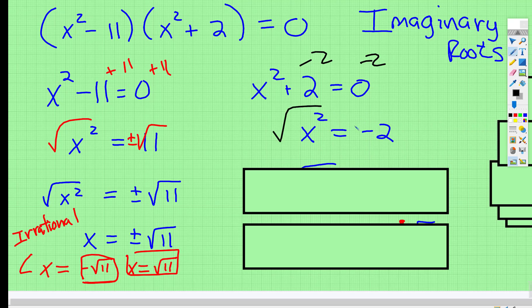Still need to take the square root. When you take the square root of this, rewrite it as negative 1 times 2, because you know what the square root of negative 1 is.